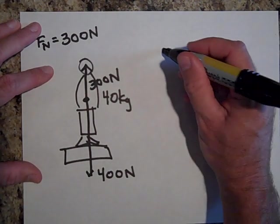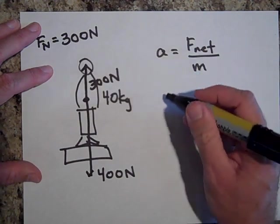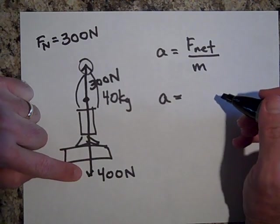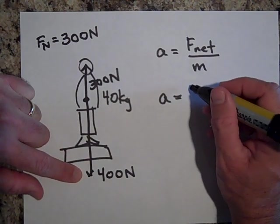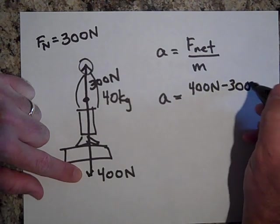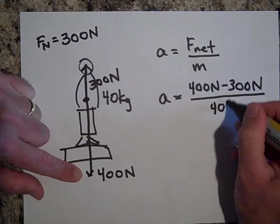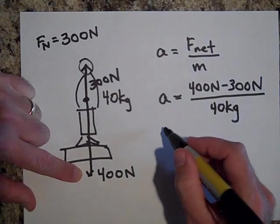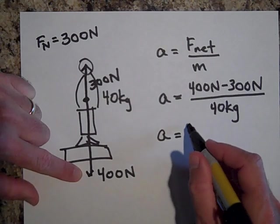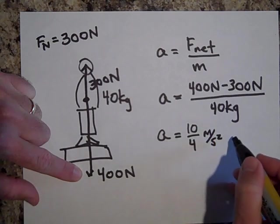So a equals F net over m. a equals, now I'm going to say this time the downward force is winning so I'm going to put that one first, so it's 400 newtons minus 300 newtons all over 40 kilograms. So what is the acceleration? It's 100 divided by 40, or 10 fourths meters per second squared downward.